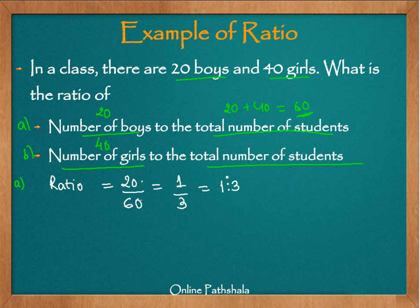What does 1 is to 3 mean? It implies that there are one-third boys in the total class. This one-third comes from the fraction 1 by 3. Let us see whether fractions can be helpful to understand the concept of ratio.